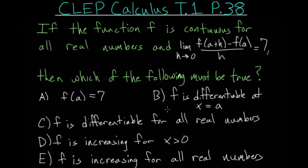For problem 38, if the function f is continuous for all real numbers, and the limit as h approaches 0 of f of a plus h minus f of a, all divided by h, is equal to 7, then which of the following must be true?